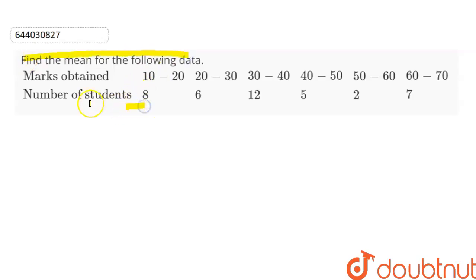The data is given to us as marks obtained and number of students. So the first column is marks obtained.